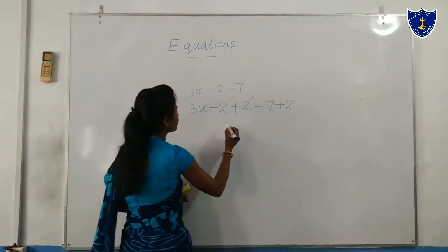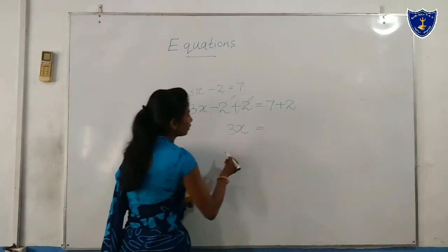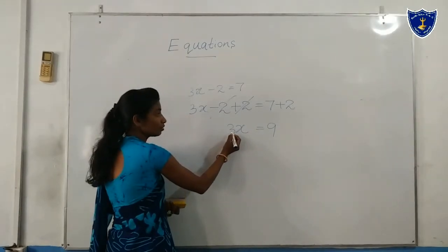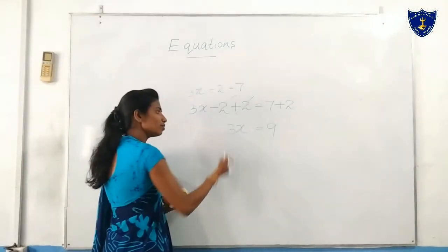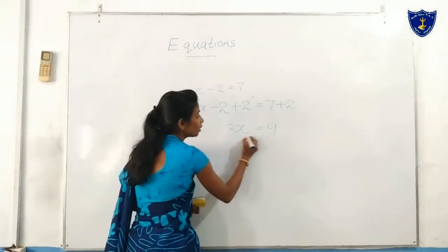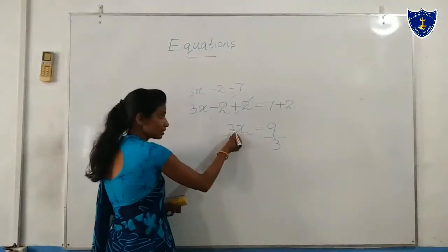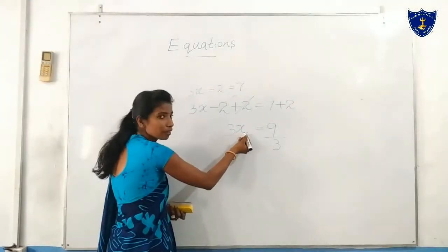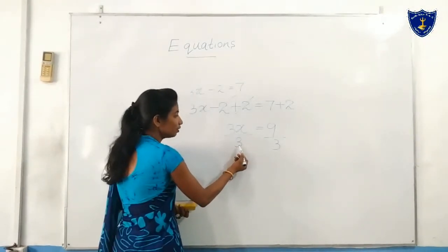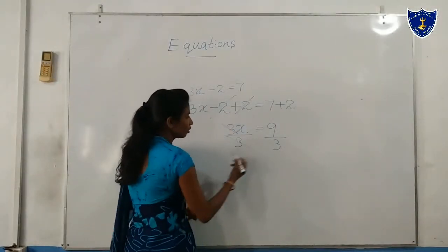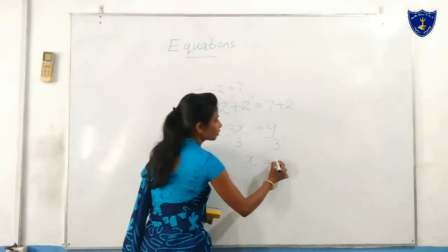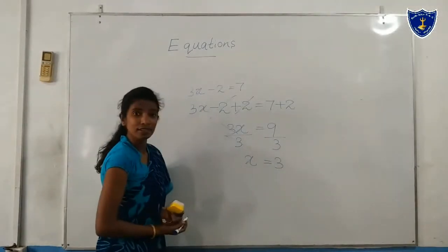When we add 2, the 2 cancels out and 3x remains. 7 plus 2 gives 9. Here we can see 3 times x, so the inverse operation of multiplication is division. We divide both sides by 3. The 3 cancels out, and x equals 9 divided by 3, which gives 3. So x equals 3 — that is the solution.